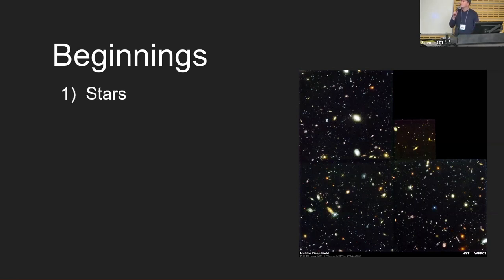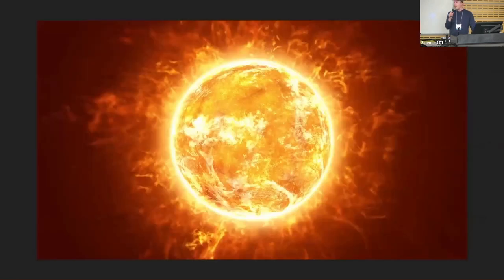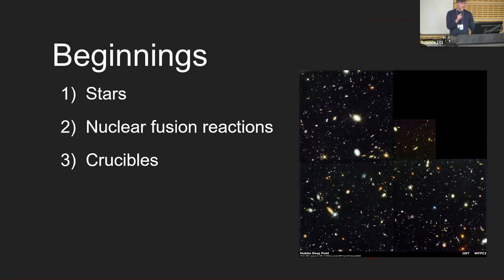When we think about stars, what are we looking at? We're looking at nuclear fusion reactions. That's what a star is. When you catch sight of our sun, what you're seeing is a nuclear fusion reaction — hydrogen being turned into helium. So a star is essentially a crucible; it is creating elements.